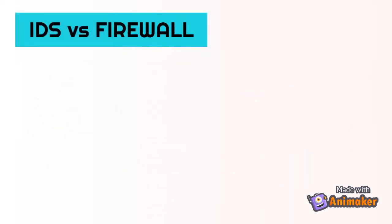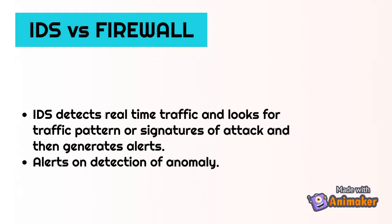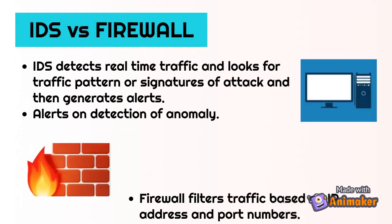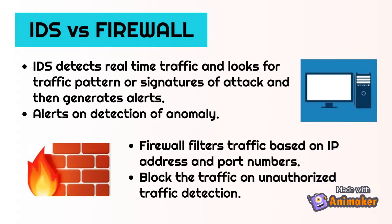IDS vs Firewall: IDS detects real-time traffic and looks for traffic patterns or signatures of attack, then generates alerts. It alerts on detection of anomaly. A firewall filters traffic based on IP address and port numbers and blocks traffic upon unauthorized traffic detection.